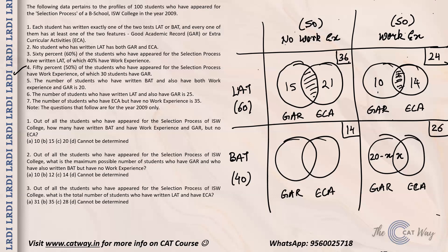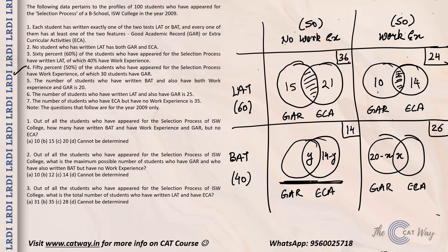The number of students with ECA but no work experience is 35. The LAT portion of that is 21, so the BAT, no work experience, ECA portion is 14. This combined part was 14, and since the BAT, no work experience, GAR part turns out to be 0, all 14 are ECA. The BAT with work experience totals 26, and 20 have GAR, so the remaining 6 have ECA.